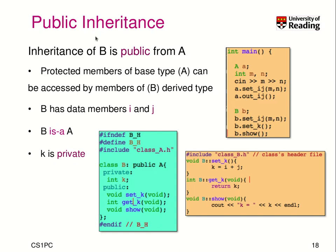So far, what we used is public inheritance, and that's what we use in the following example. We have a class B that we inherit from class A, with data members i and j. We also add a new data member, k. We provide setters and in this case also a getter.